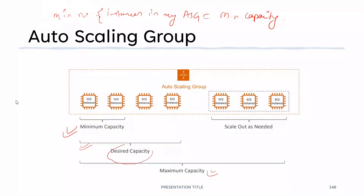The maximum capacity is the opposite of minimum capacity — the maximum number of instances you can have in your Auto Scaling Group, for example seven instances. Now, what is desired capacity? If you have minimum capacity and maximum capacity, why deal with desired capacity? Desired capacity is basically how many instances you want to start with when you create an Auto Scaling Group — for example, you want to start with four instances.